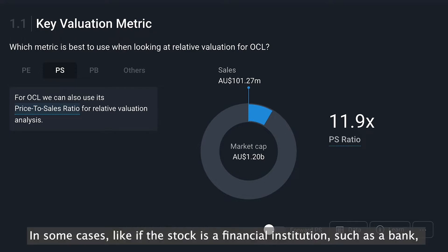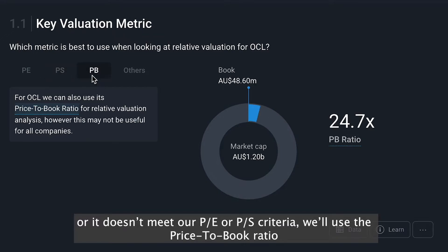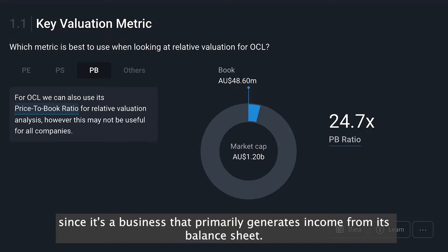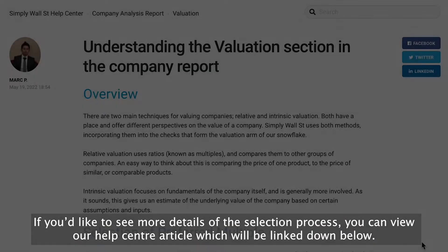In some cases, like if the stock is a financial institution such as a bank, or if it doesn't meet our price to earnings or price to sales criteria, we'll use the price to book ratio, since it's a business that primarily generates its income from its balance sheet. If you'd like to see more details of the selection process, you can view our help center article which will be linked below.